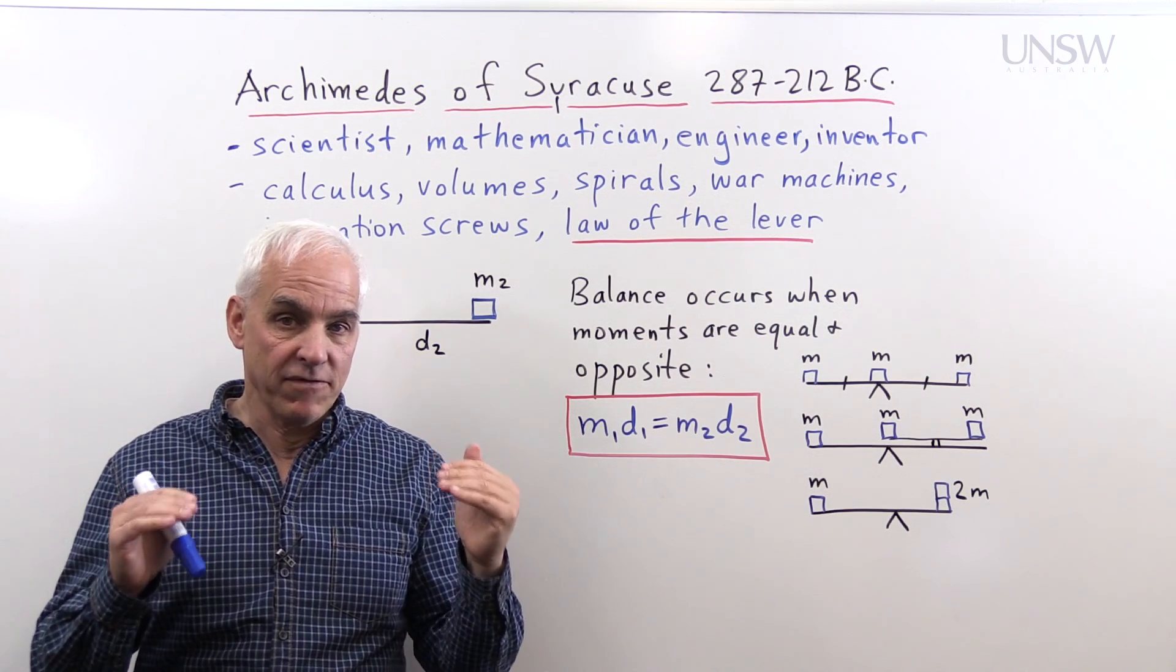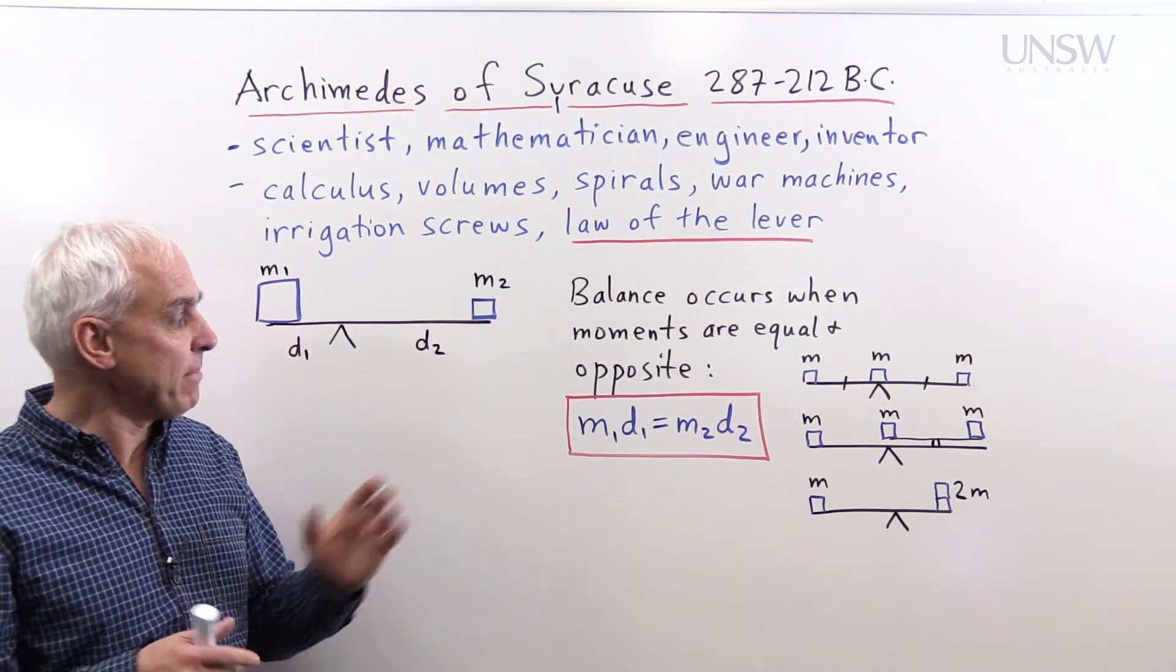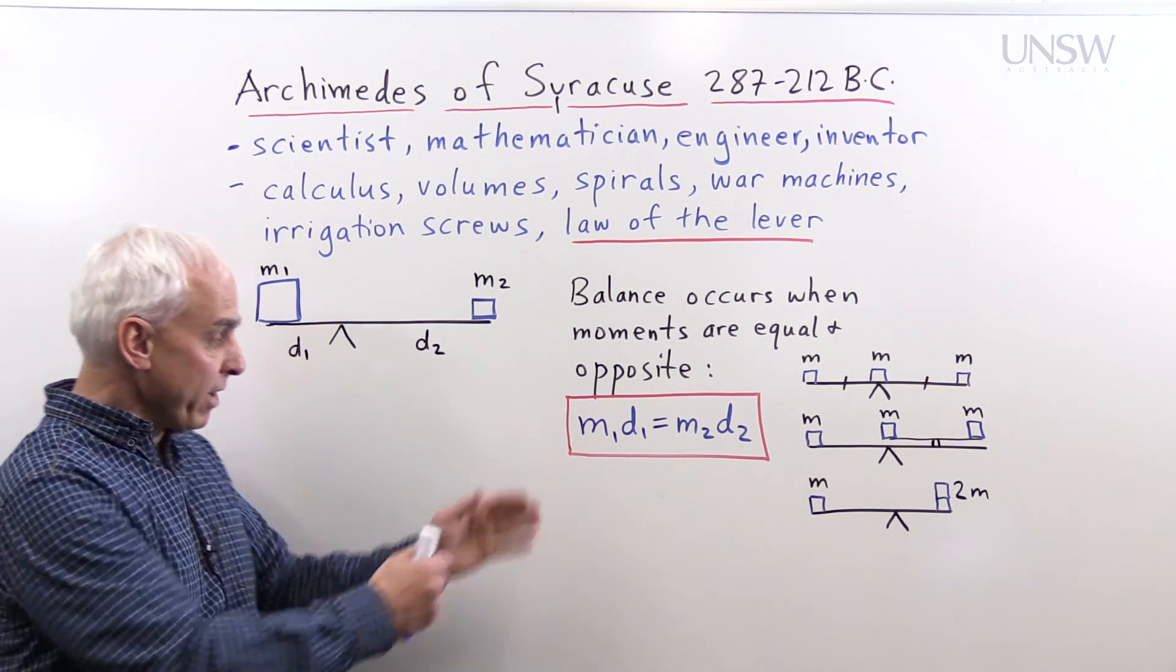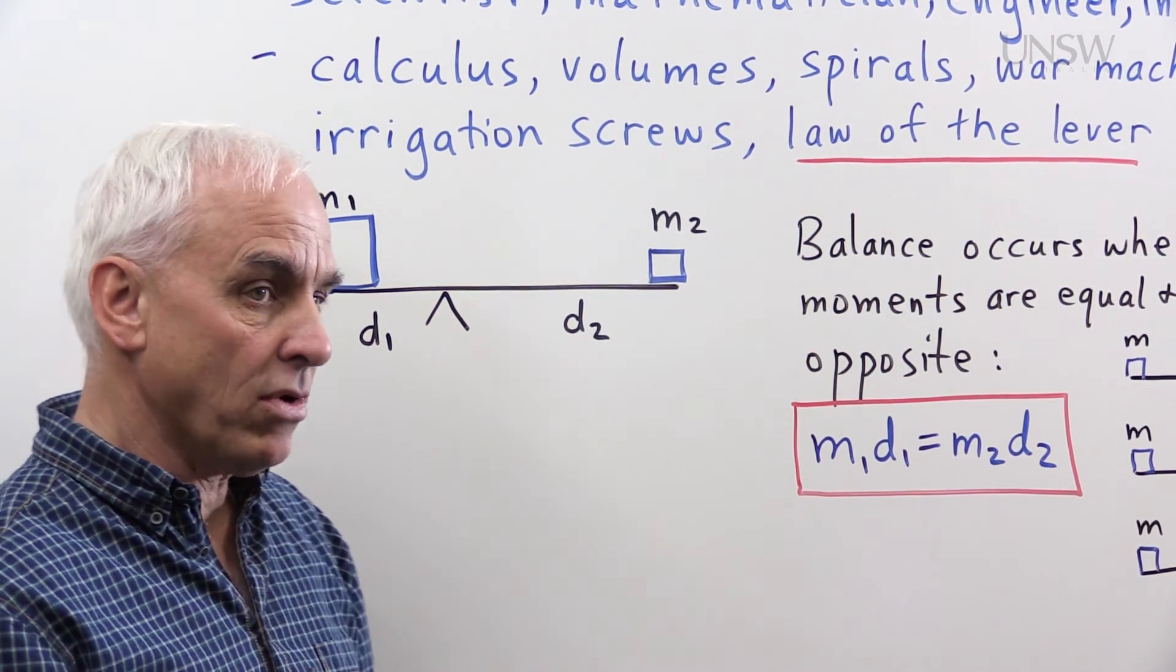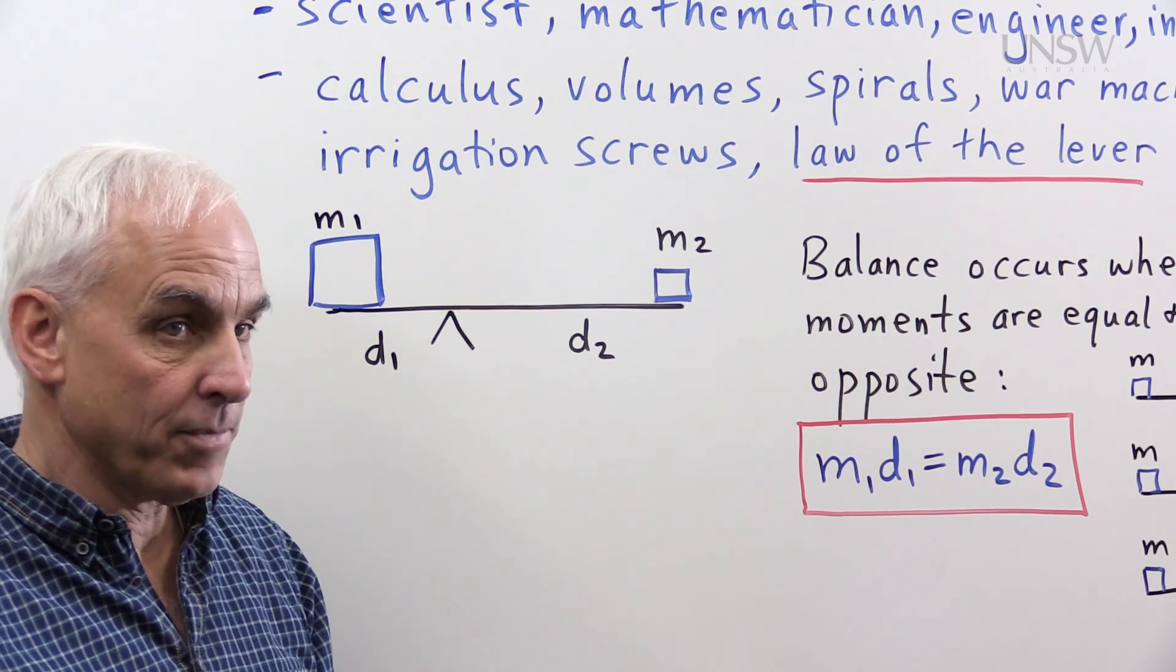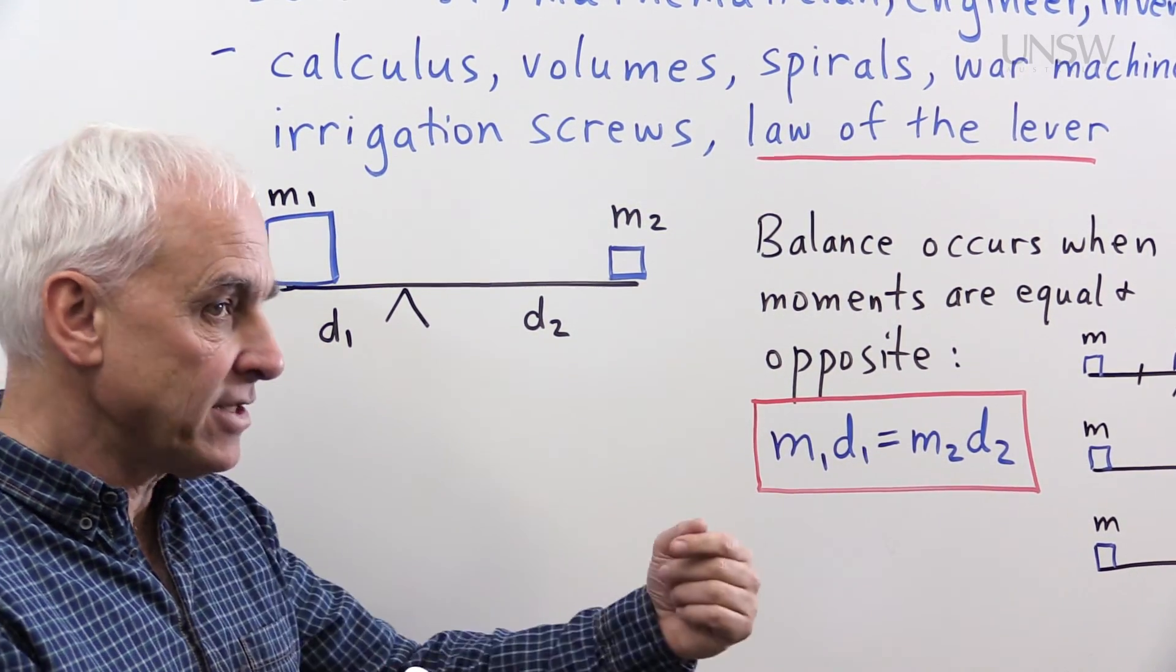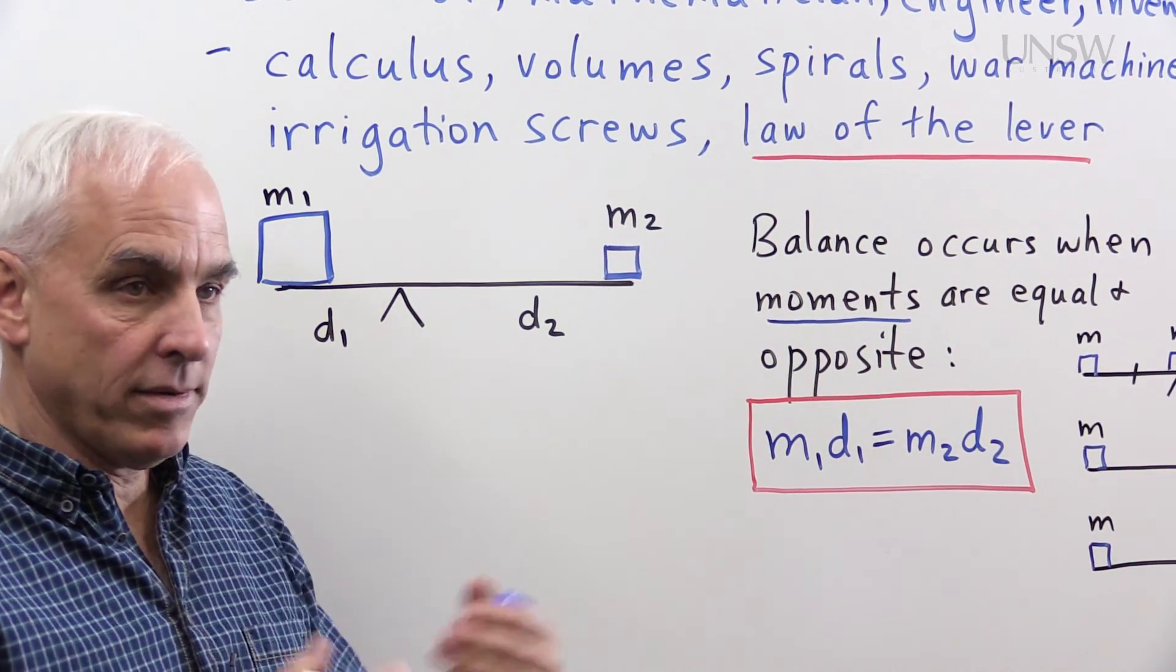So people had thought about the lever before Archimedes. In fact, Aristotle had a theory, a kinetic theory, of why the lever works. But Archimedes came up with a relatively simple reason for this fundamental law that explains when you have balance between two possibly different masses on different sides of a fulcrum. This is the essential formula that controls the story of the lever. So here's a fulcrum, and we have a mass m1 on this side and a mass m2 on this side. And here the separation between the fulcrum and the mass m1 is d1. And here this length is d2. And the law of the lever says that these balance precisely when m1 d1 equals m2 d2. Now these quantities, the product of the force times the distance, are sometimes called moments. So that's a physical term. So we can say that balance occurs when the moments are equal and in opposite directions.